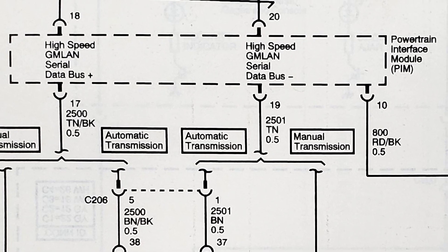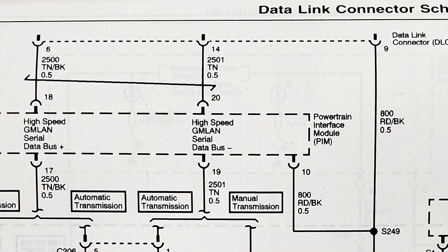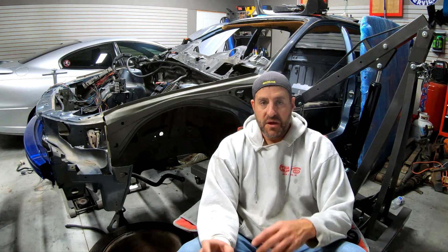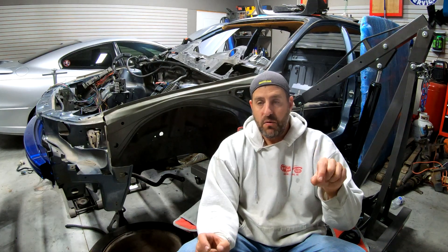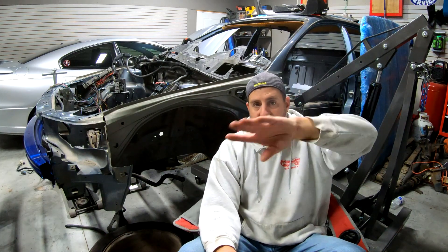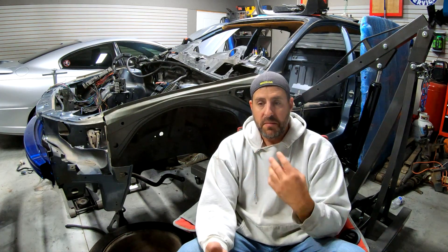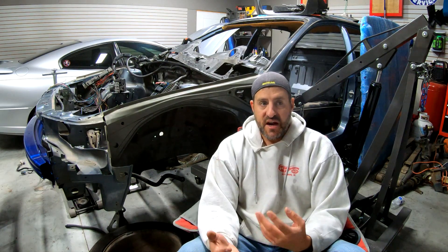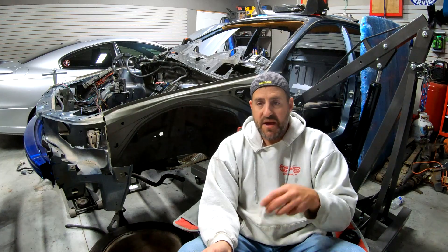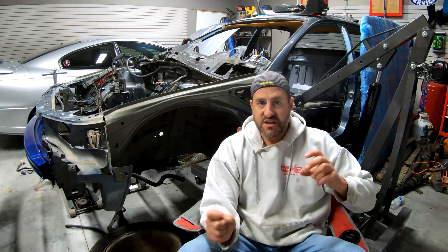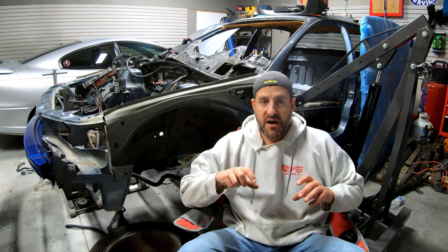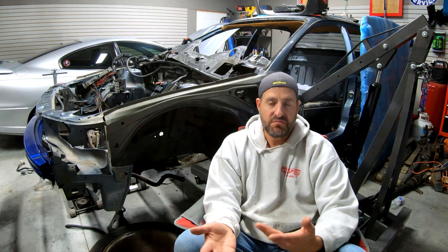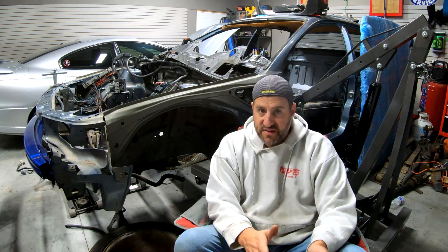It makes one last stop after that — it stops at the data link connector, or the OBD2 port that's under the dash, and it terminates there. All those modules communicate on the network and talk back and forth to each other on a simple twisted pair. It's high-speed communication, and the cool thing about a CAN network is you can just keep adding modules to the network as long as all the devices speak the same language. It's a really cool system that they started going to in about the mid-2000s.